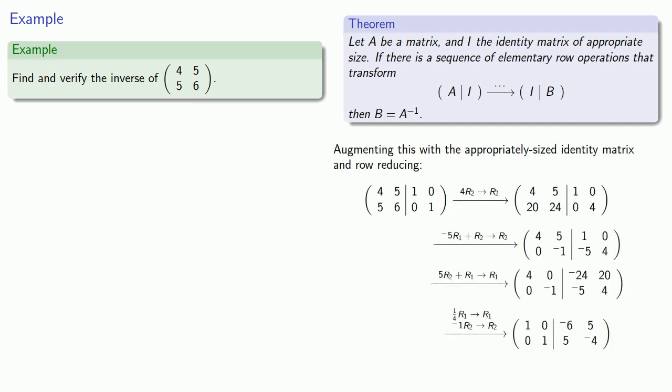And after all the dust settles, we have the identity matrix here on the left-hand side, and this thing on the right-hand side is the inverse. Or so I claim.